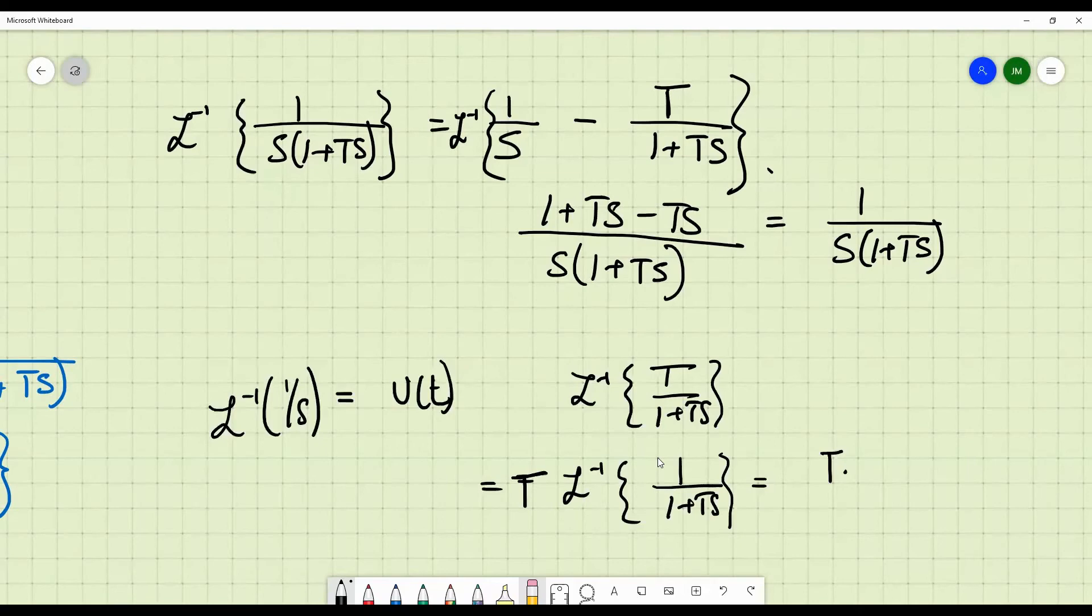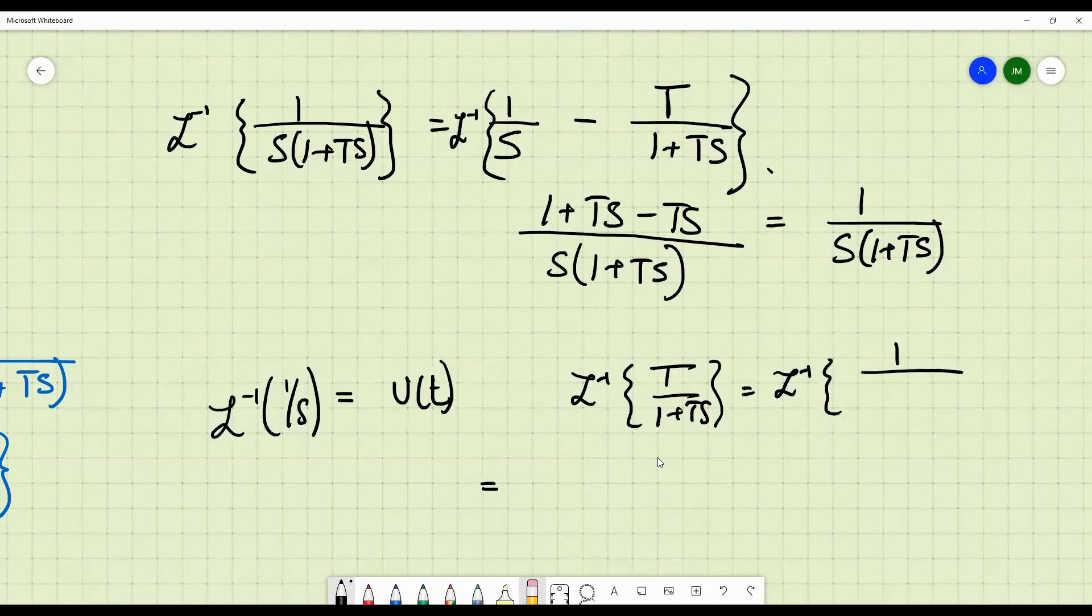Or rather, don't take T outside. There is another method to do this. This is nothing but L inverse of 1 by, you divide by T on both the numerator and denominator, S plus 1 by T. So if you would have remembered your Laplace transform classes in signals or systems or control systems, you would recognize that L inverse of 1 by, so this is 1 by S plus A form. So, this is E power minus AT. So, this becomes E power minus T by capital T.